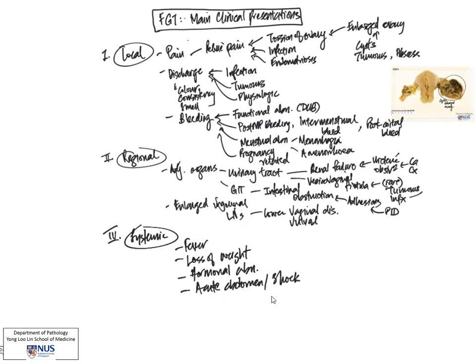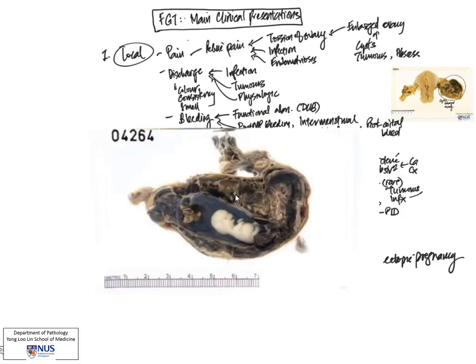This can occur with ruptured organs in the female genital tract. For example, an ectopic pregnancy that can occur in the fallopian tube, as you can see here. This may actually rupture and bleed.